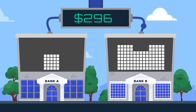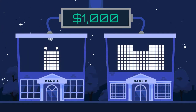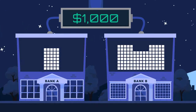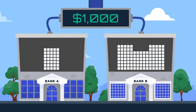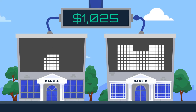When banks borrow from each other like this, it's typically just overnight. The next day, Bank A returns the funds plus a bit of interest to Bank B. These transactions occur in the federal funds market, and the interest rate banks agree to is the federal funds rate.